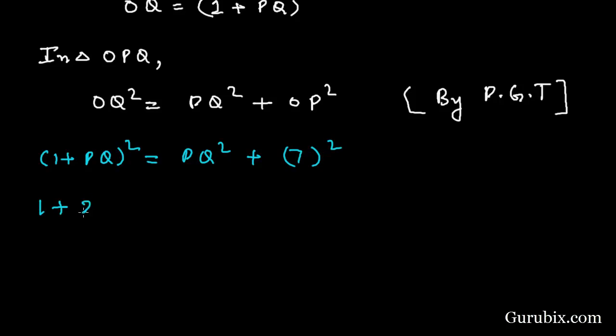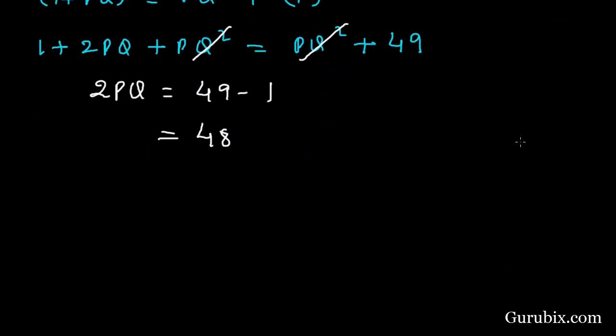It will be 1 plus 2PQ plus PQ squared equals PQ squared plus 49. We can cancel out PQ squared with PQ squared, then 2PQ equals 49 minus 1, this equals 48. Therefore PQ equals 24.